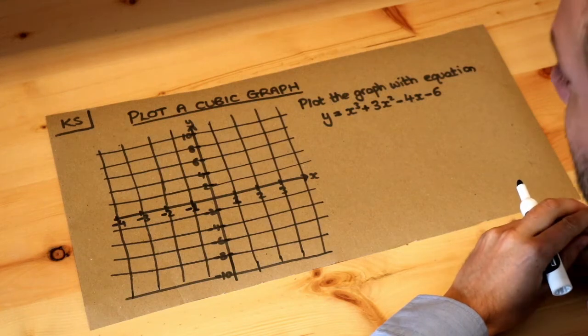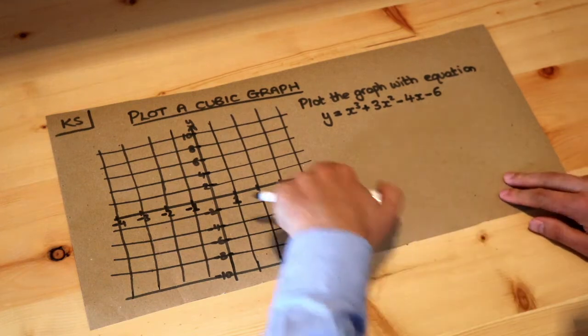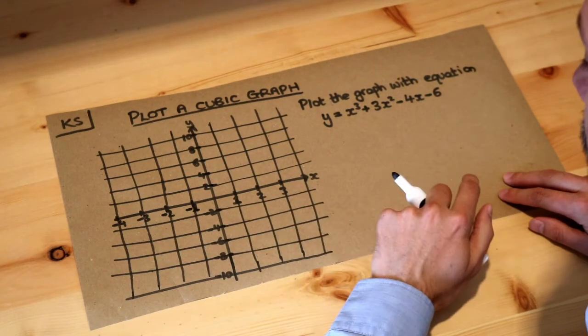Hello and welcome to this Dr. Ross Mass's key skill video on plotting a cubic graph. Now we're already given the axis and we've got values of x between minus 4 and 3.